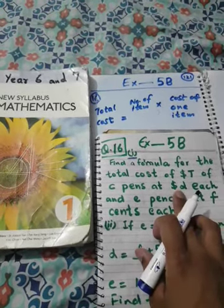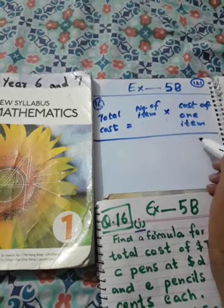The first price is given in dollars. The next price is given in cents, but you have to find the total cost in dollars. So you have to convert this cost which is given in cents into dollars first of all. To convert cents into dollars, you simply divide the given cents by one hundred. So F cents divided by one hundred gives you F over one hundred dollars. So let's do it — this was the actual formula: total cost equals number of items multiplied by cost of one item.